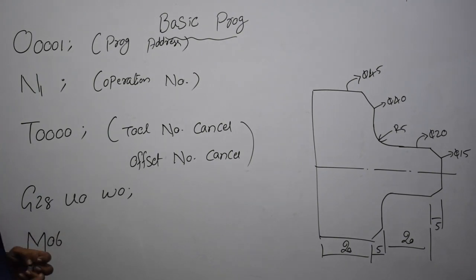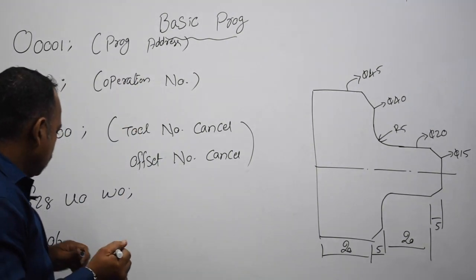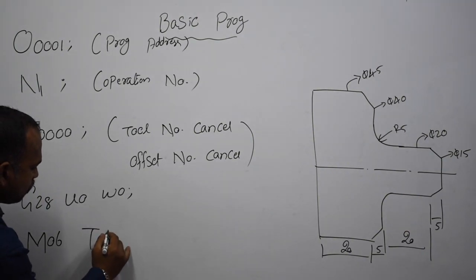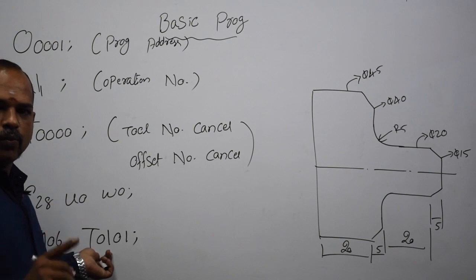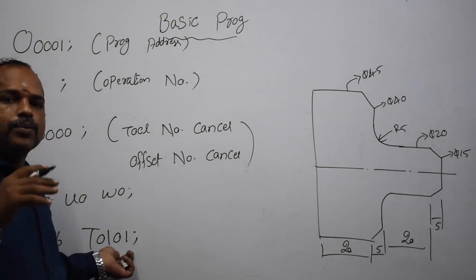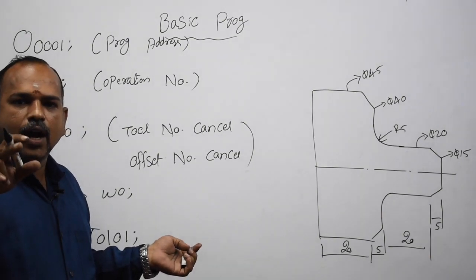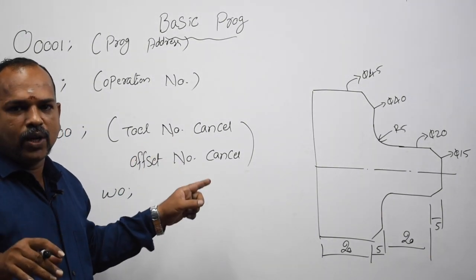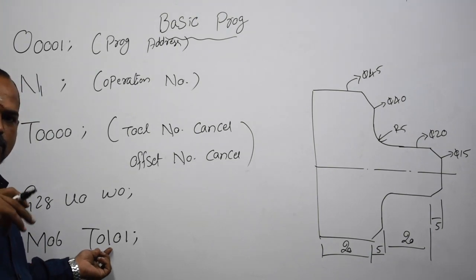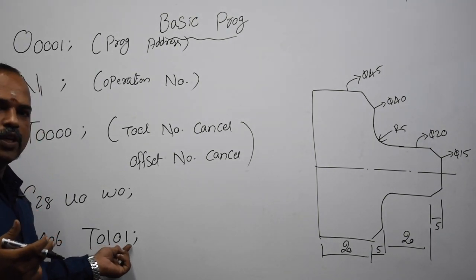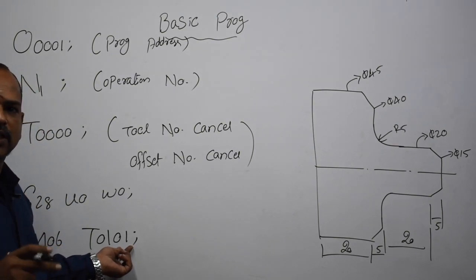M06, automatic tool change. T0101 — T01, offset number 1, T01.